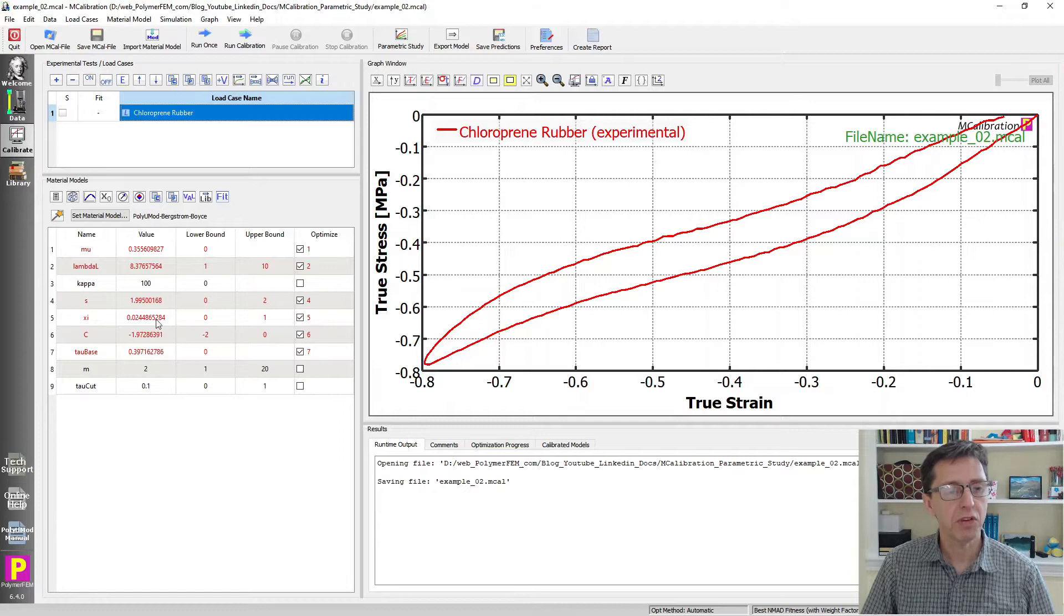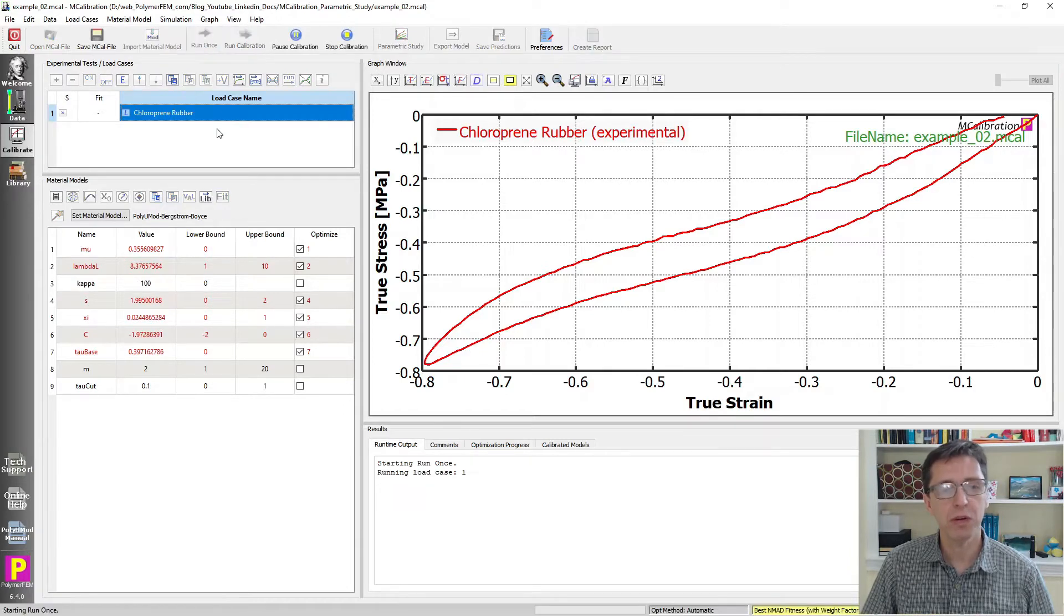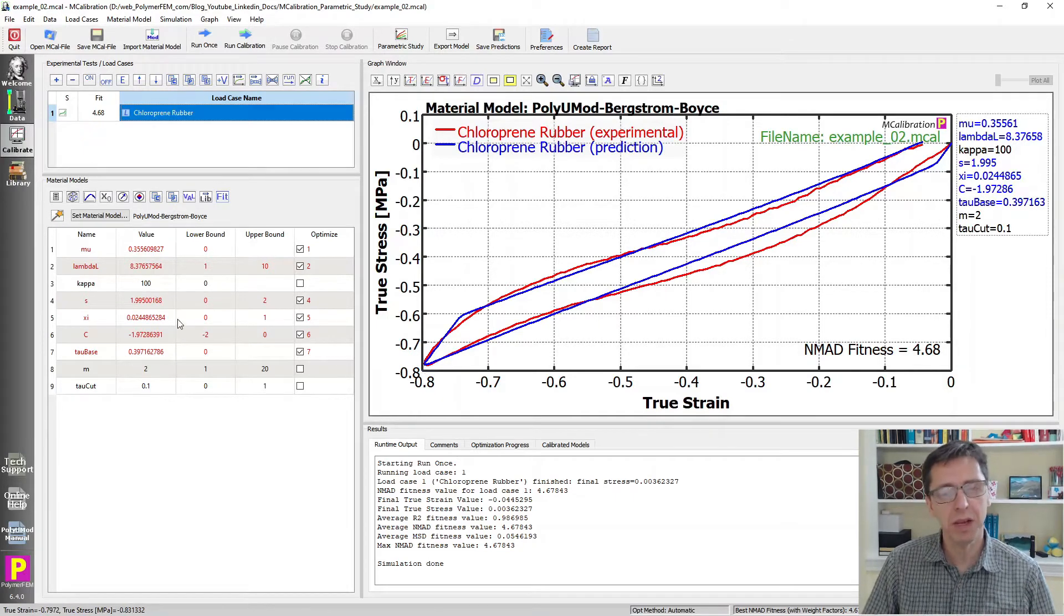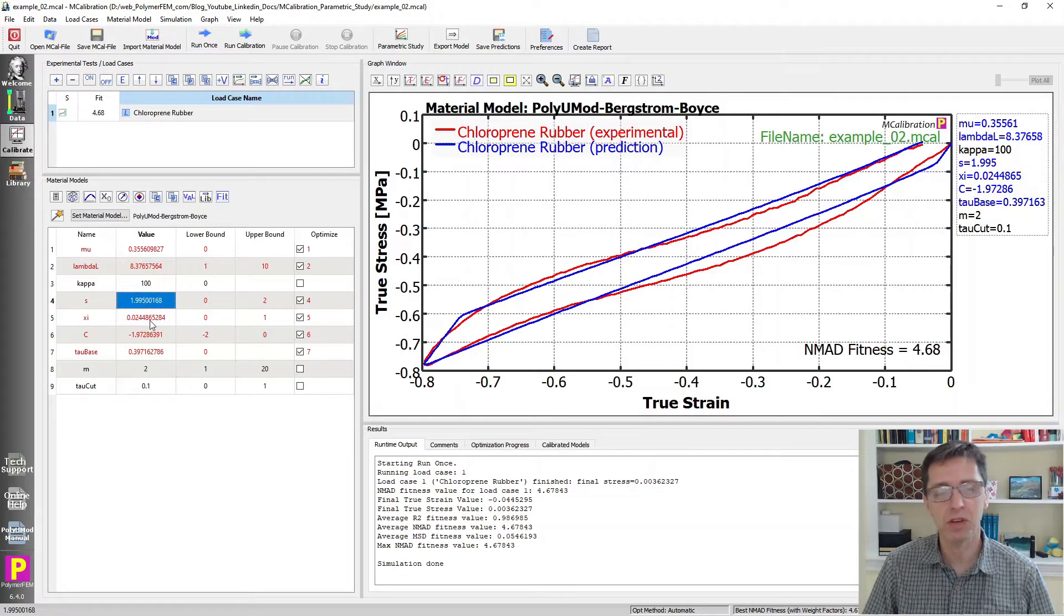There are a number of different parameters in this model, and if I click run once we'll see that the predictions in blue match the data relatively well, but it may not be clear what these different parameters do, like what's the s parameter, what does that do?